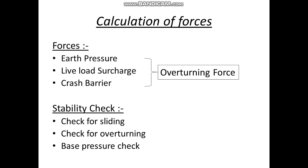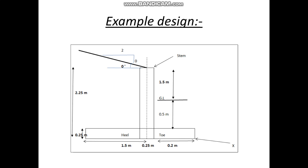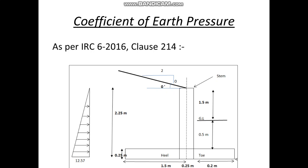The stability check is for sliding, overturning, and the base pressure. For the calculation of forces, we will take an example design. Here, we will be considering the height of the retaining wall as 2 meters. Other dimensions are varying as per the design and can be changed. For the force calculation, we need to first calculate the coefficient of earth pressure as per IRC 6 2016.